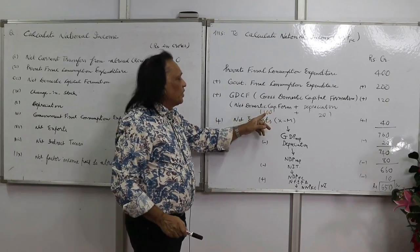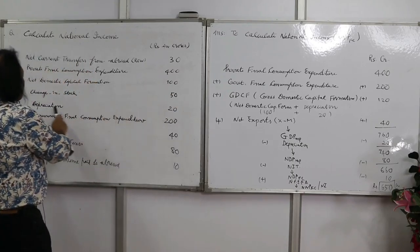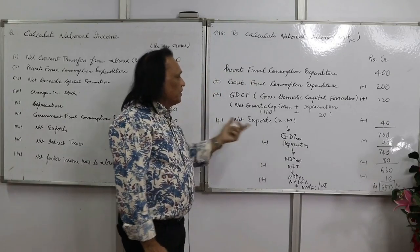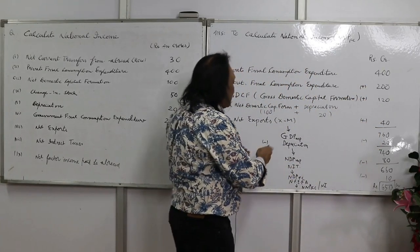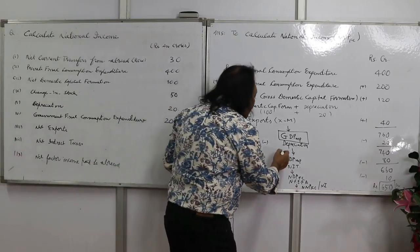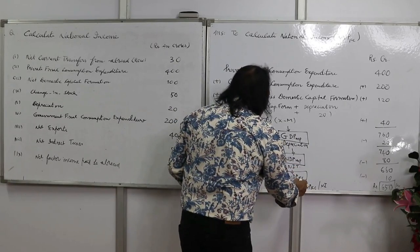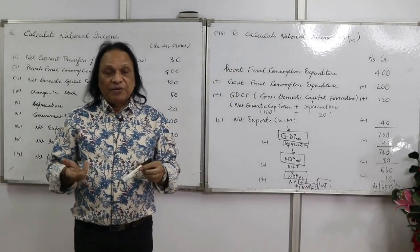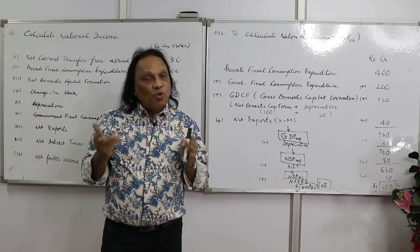Picking up the values: private final consumption expenditure is 400, government final consumption expenditure is 200, net domestic capital formation is 100 plus depreciation 20 equals GDCF of 120, and net exports is 40. Adding: 400 plus 200 plus 120 plus 40 equals 760 — this is GDP at market price. Minus depreciation 20 gives NDP at market price. Minus NIT 80 gives NDP at factor cost. Add NFIA to get NNP at factor cost — national income equals 650.